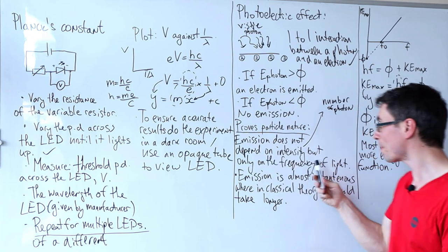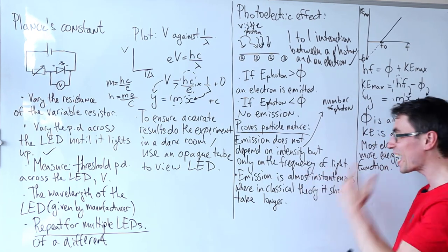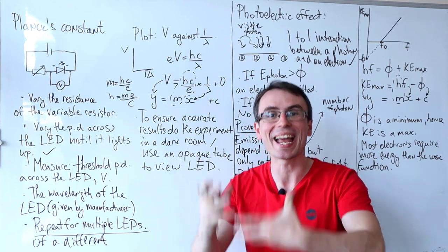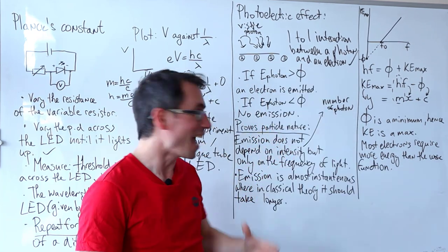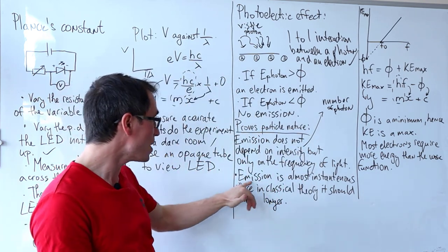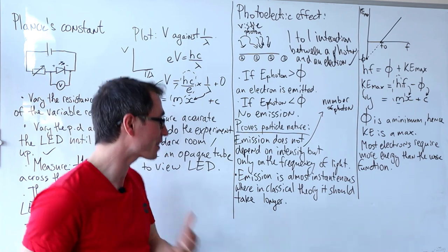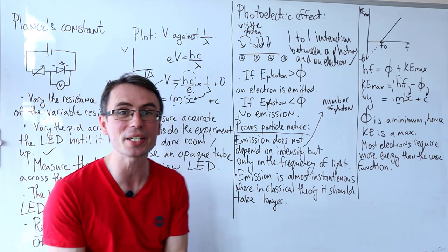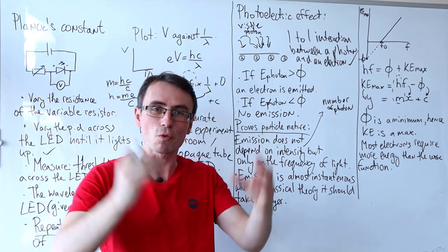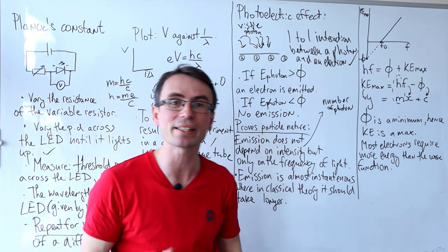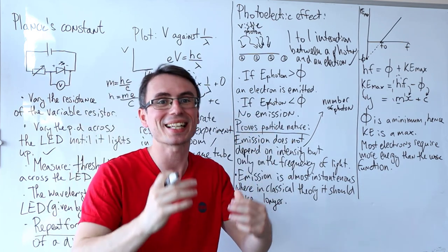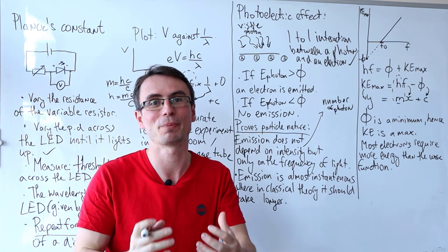So the emission does not depend on the intensity but only on the frequency of the light, i.e., the energy of the photon. And the next part is crucial to the explanation of the particle nature of light. The emission is almost instantaneous, whereas in classical theory it should take longer. You can actually calculate it should take a few minutes, but the energy arrives in packets, proving that light indeed has particle properties.